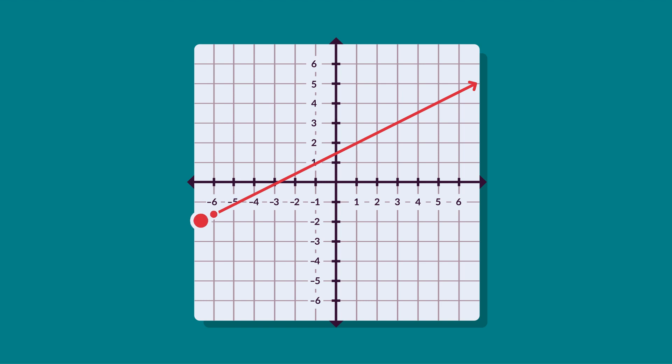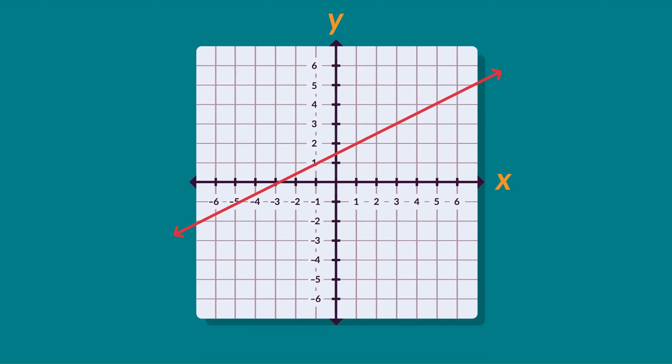This line represents an infinite number of points that have the same relationship between x and y, with the arrowheads at either end of the line showing that it extends infinitely in both directions.